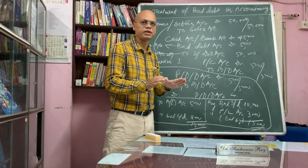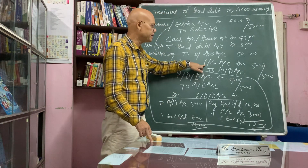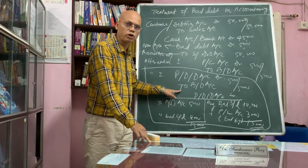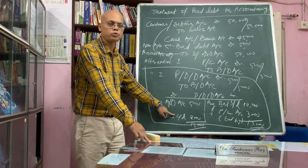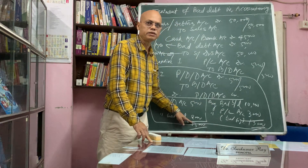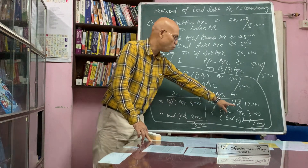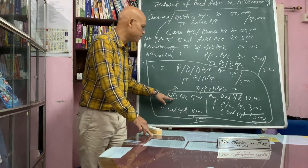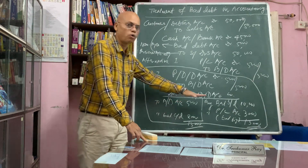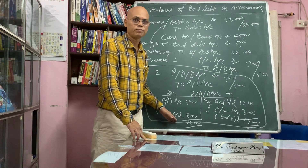In nutshell: since bad debt is a nominal account, it should be closed to the P&L account. It can be directly charged to the P&L account, or it may first be debited to the provision for doubtful debts account. Then the closing balance of the provision account is charged to the P&L account after balancing. Students should keep in mind that bad debt charged to the provision account cannot exceed the opening balance — the difference is always charged to the P&L account.